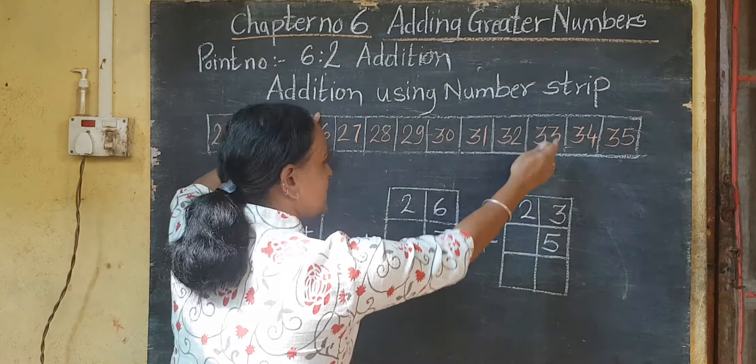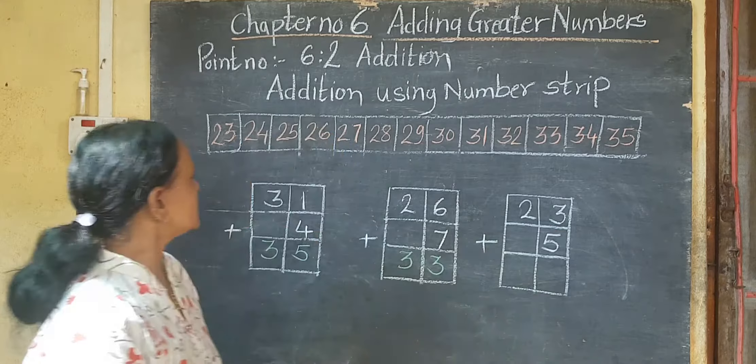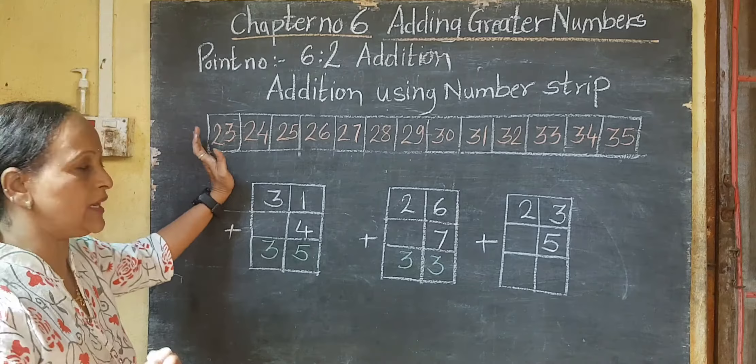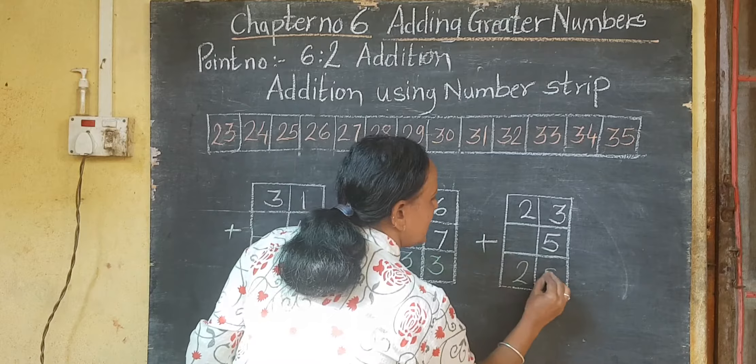Next example — which number is this? 23. So here is 23 on the strip. From 23, go forward five steps — one, two, three, four, five. Your answer is 28. Understood?